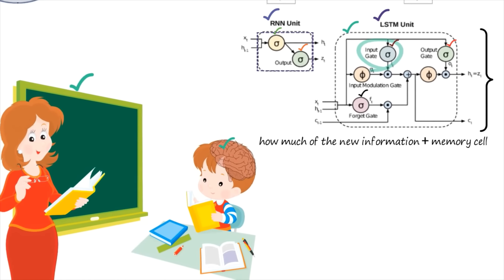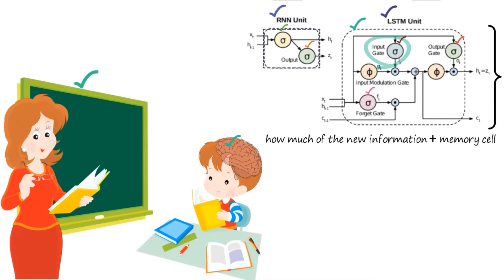Now, the forget gate — this is the main attraction of the LSTM model. The forget gate in the LSTM network determines how much of the information from the previous memory cell should be retained or forgotten, just like the human brain decides how much information to keep and how much to forget. It takes the current input data and the previous hidden layer state, and uses an activation function to generate a gate value between zero and one.